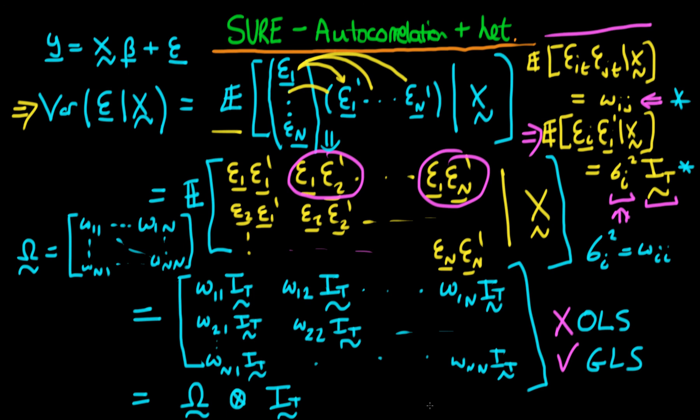This is quite striking. The initial assumption was that for each individual the Gauss-Markov assumptions are upheld. But what this shows is that if there is information left in the errors between different individuals, that is information we could use to make our estimates better. That's why using GLS on the system is better than just doing OLS on each individual equation separately.